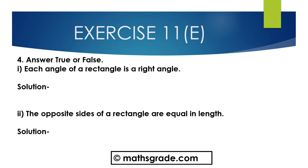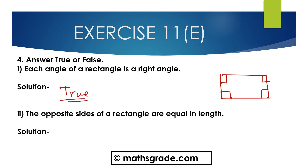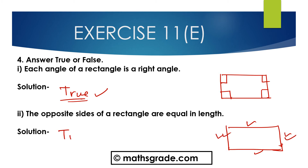Now question number 4: answer true or false. Part A: each angle of a rectangle is a right angle — in a rectangle each angle is 90 degrees, so this is true. Part B: the opposite sides of a rectangle are equal in length — opposite sides in a rectangle are equal, these two sides in length are equal and the breadth sides are also equal, so this is also true.